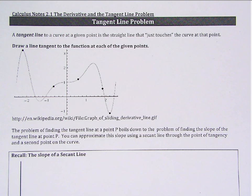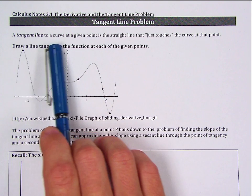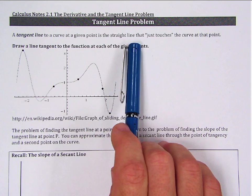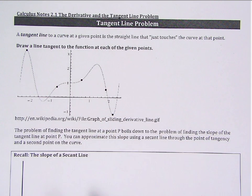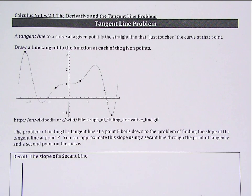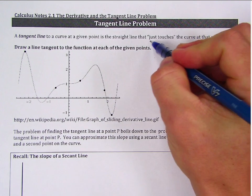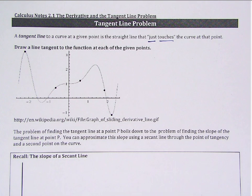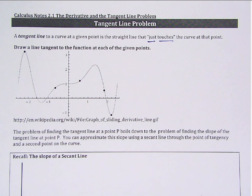Just a little review: the tangent line to a curve at a given point is the straight line that just touches the curve at that point. Now obviously that's not a very mathematical definition, but let's draw some tangent lines so that we can get an idea of what this is.